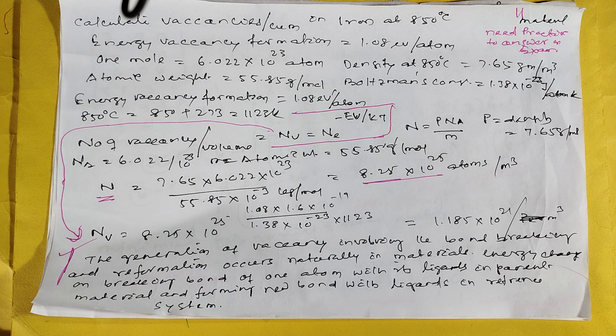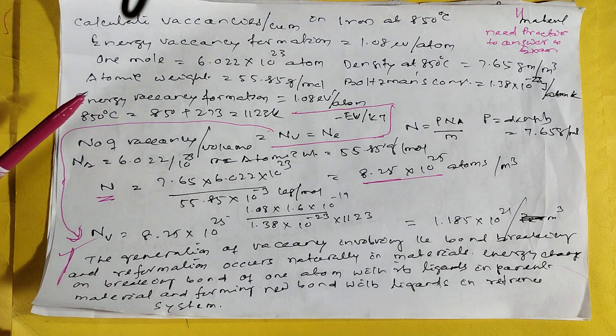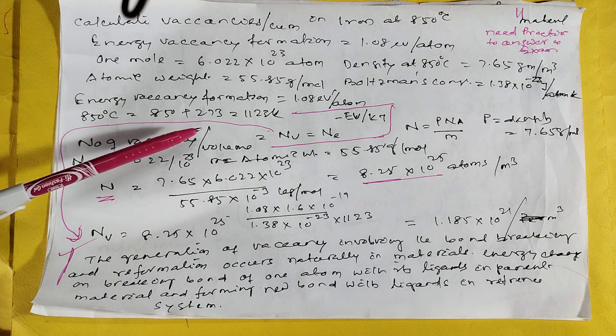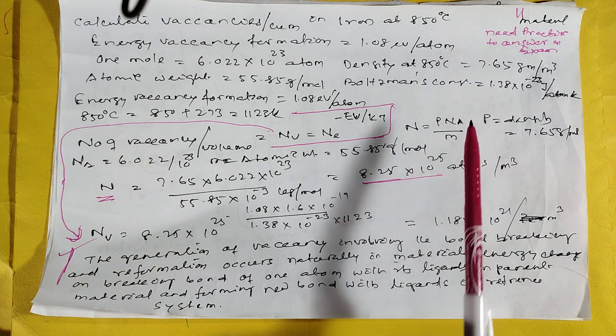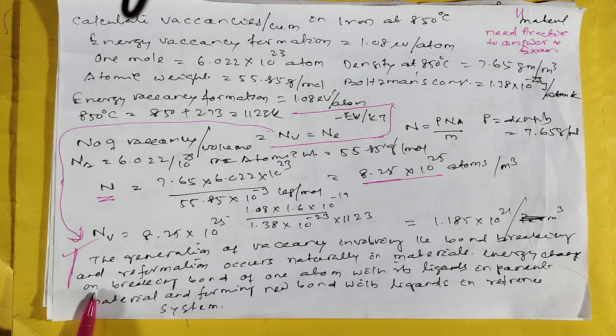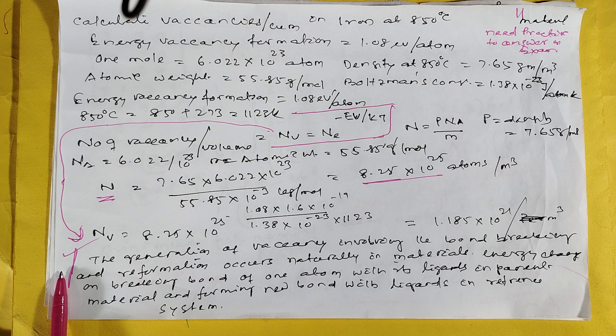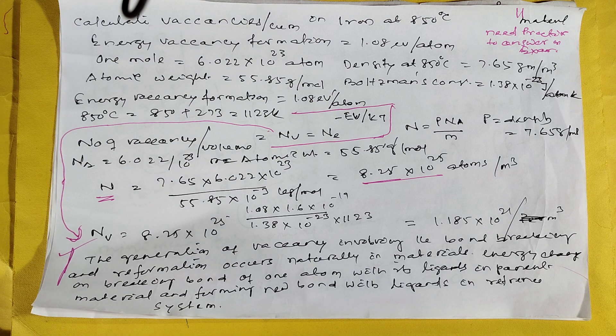This is calculate vacancy. That is a material science problem, a difficult problem. This is the energy vacancy formation. Number of vacancy per volume Nv, you have to calculate. N you can calculate from this formula, then put everything. Nv will come. The generation of vacancy involving the bond breaking and reformation occurs naturally in material. Energy in breaking bond of one atom with ligands in parent material and forming new bond with ligands in the reference system, that is called the vacancy energy.